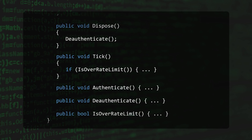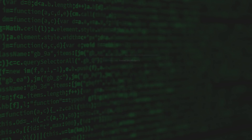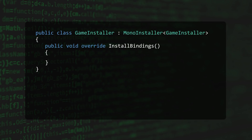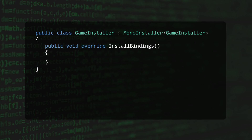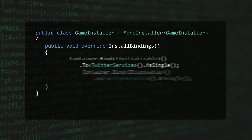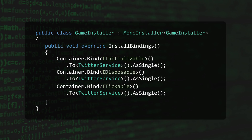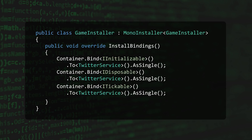But we're not finished yet — now we need to add some bindings. Taking what we learned from part two of this series, all we need to do is bind each interface to the class. There are actually a few ways to accomplish this. In fact, we could do this with a one-liner using the non-generic bind method.